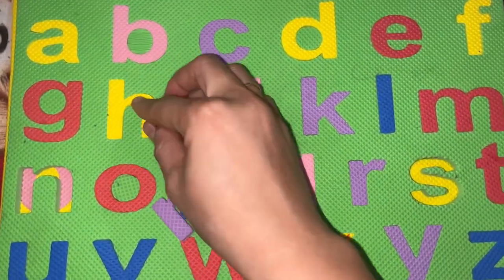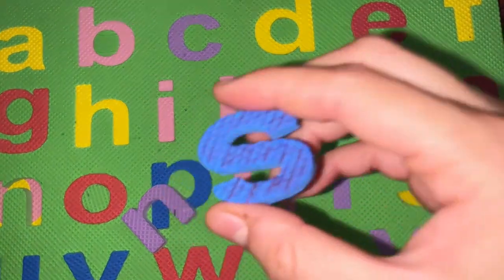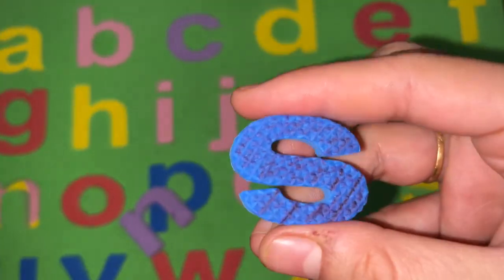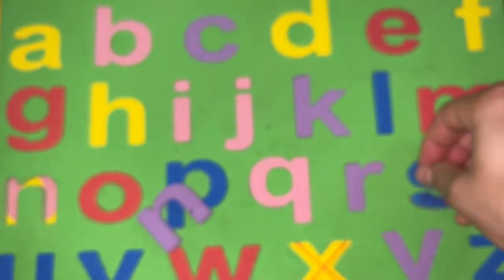Can you identify the next letter? It's S, S for sun and S for seeds.